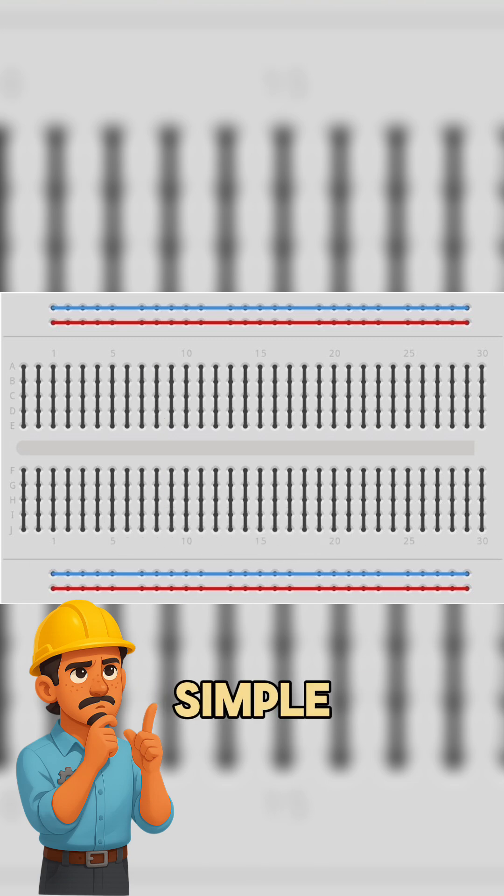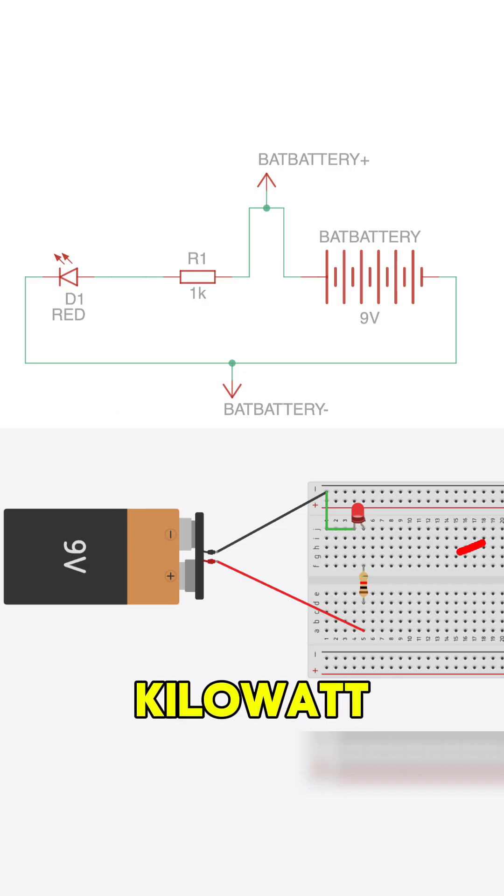It's perfect for quickly testing simple circuits like the one we're building today. Here's our setup: a 9 volt battery, a 1 kilo ohm resistor, and a red LED light on a breadboard.